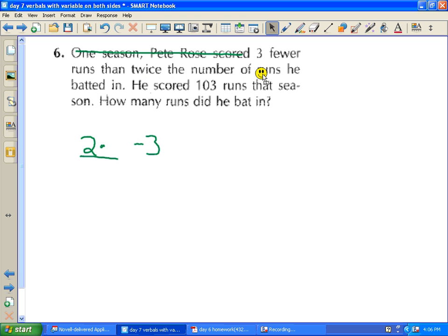Twice the number of runs he batted in. Batted in means that he hit the ball and some people scored because he hit the ball. So I'm going to use B for either batted in or hitting the ball. So then twice the number of runs he batted in is this part of the problem.